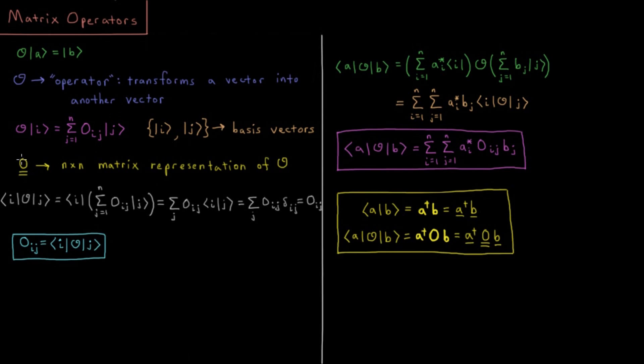O double bar is going to be the n by n matrix representation of the operator O, and its elements are going to be these Oij, telling us how much each of these basis vectors get transformed into others due to the effects of this operator.